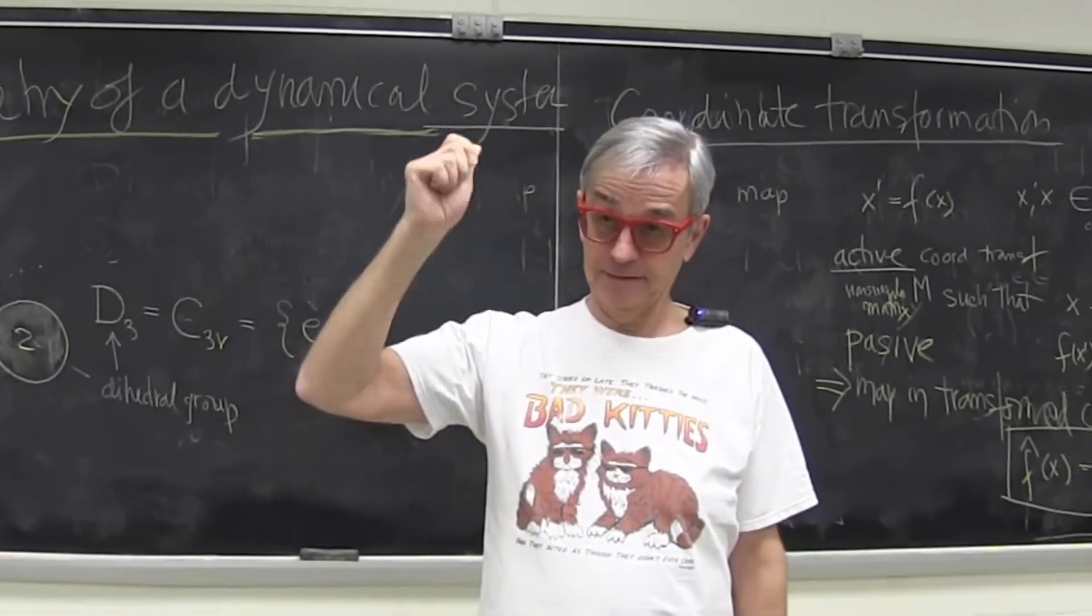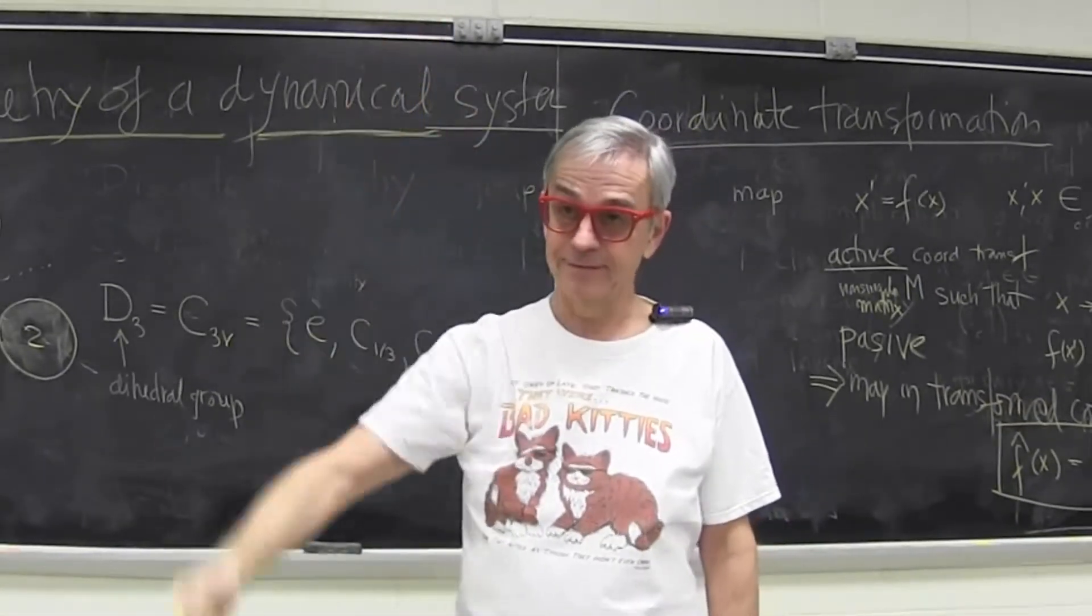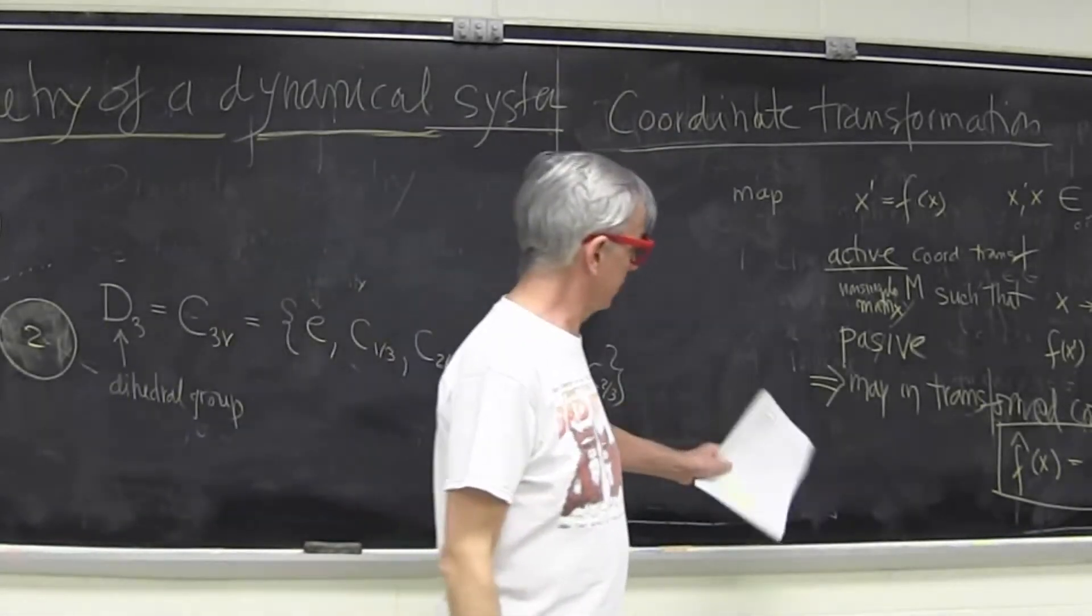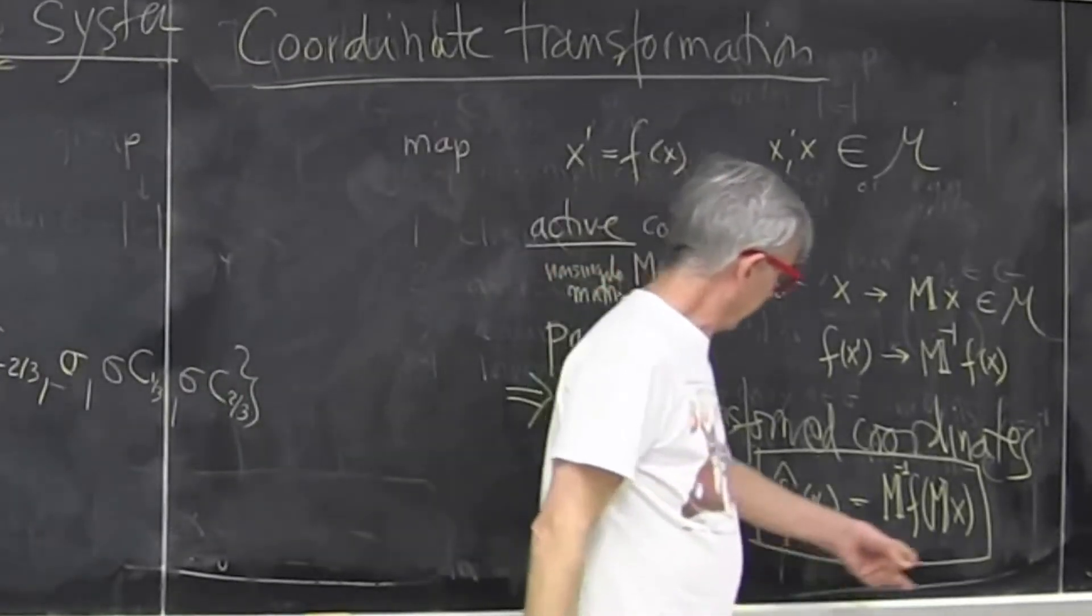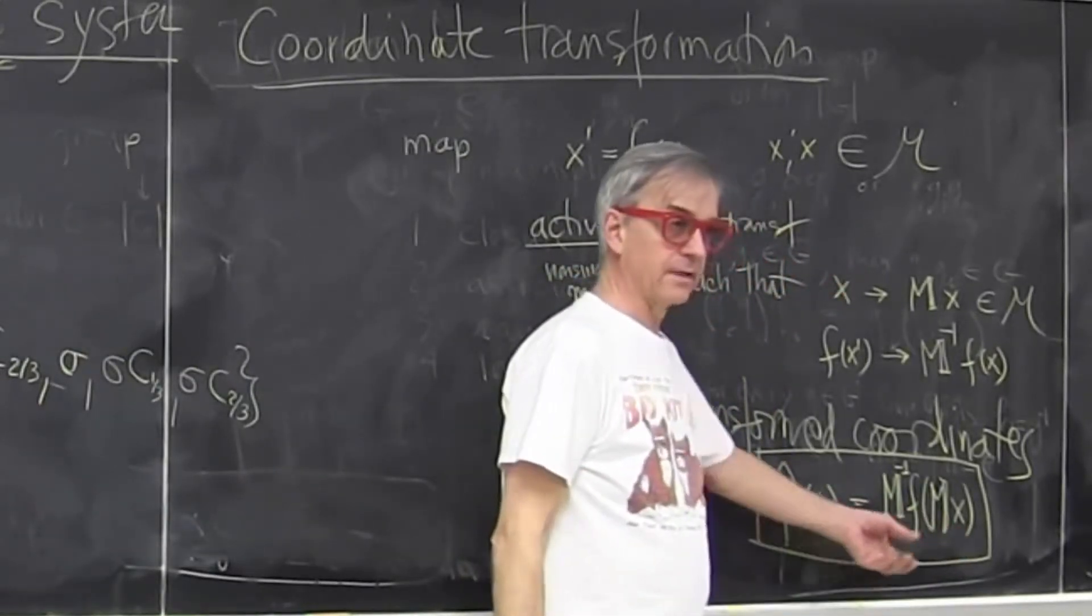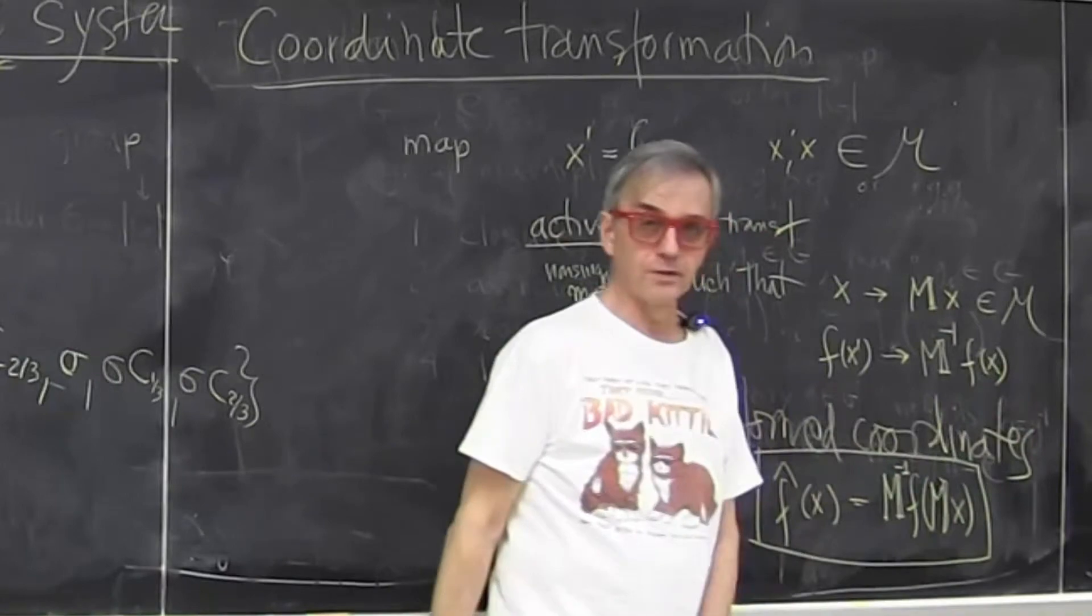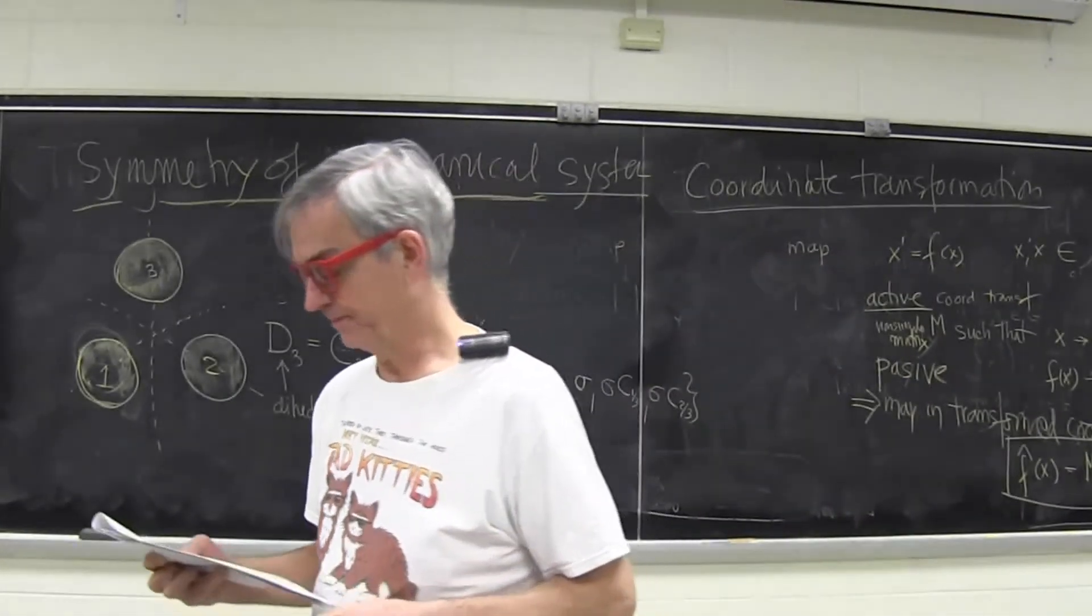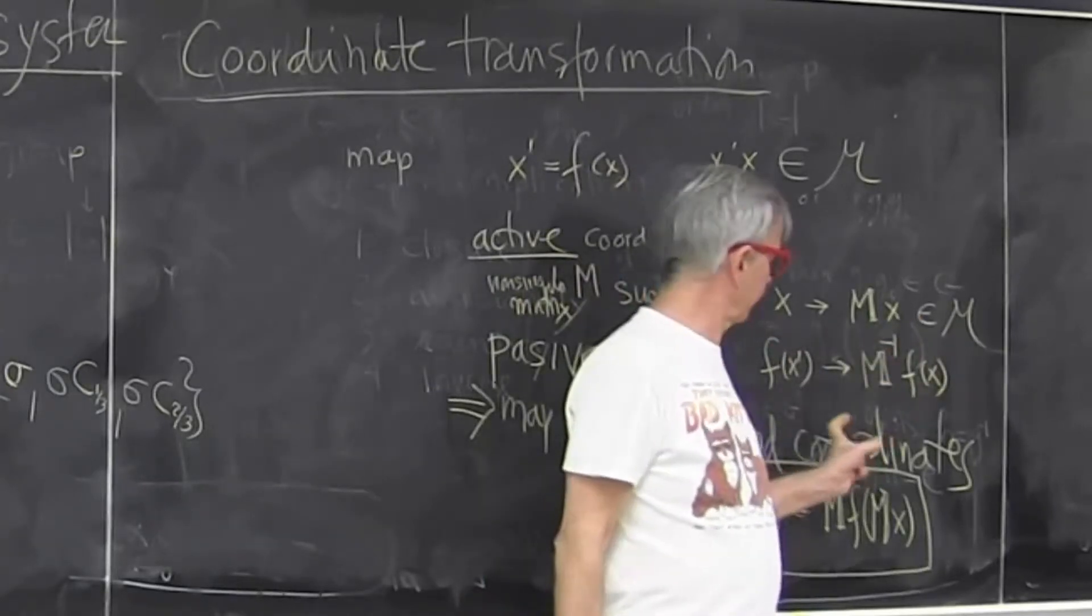But if there is a symmetry, then something happens. So you have to appreciate it. In general, this is what Newton says here, but in some other coordinates it looks like a totally unrecognizable piece of gibberish. A different law. We did this with smooth conjugacies.